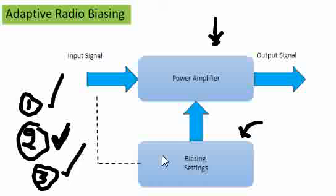All these scenarios help us achieve low power operation for the chipset. That is where adaptive radio biasing helps — mainly for low power operation. It is a very important feature implemented in modern RF chips, especially in the power amplifier biasing section.